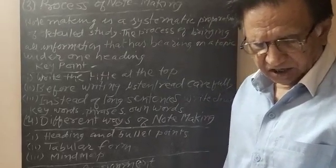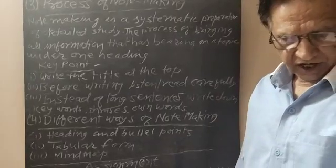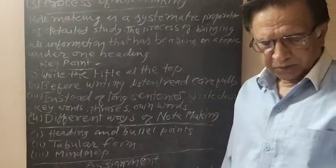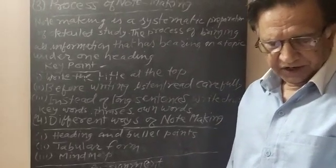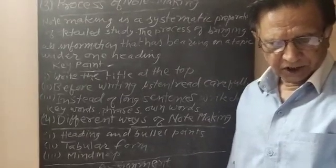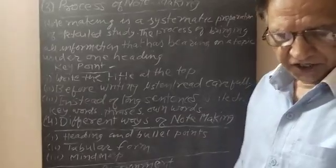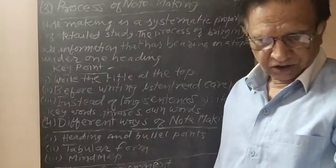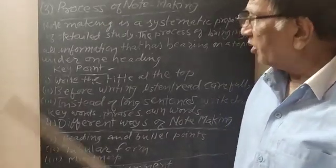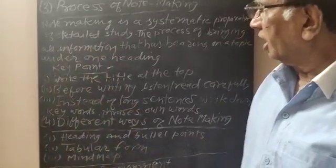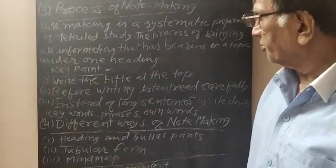As a learner reads the text, they locate the point which they think relevant and reduce them to the writing in their own words. Now, what are the key points during the process of note making?